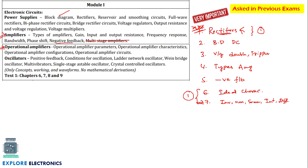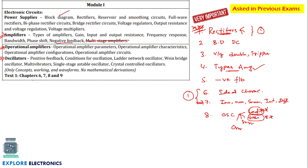To recap: rectifiers are very important and types of amplifiers can be expected. Coming to oscillators, we have four types: ladder network oscillator, Wien bridge oscillator, single-stage astable oscillator, and crystal oscillator. Out of these four, the ladder network oscillator is very very important and the Wien bridge oscillator is also important. We can expect one question from oscillators in the exam.